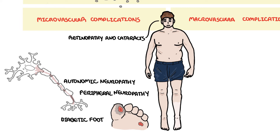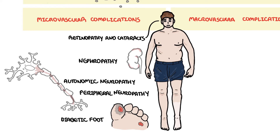The other type of neuropathy is autonomic neuropathy, which causes dysfunction in the sympathetic and parasympathetic nervous system. This can lead to things such as erectile dysfunction, postural hypotension and gastroparesis. The final type of microvascular complication is nephropathy, where you get damage to the glomerulus of the nephron, which leads to proteinuria. Diabetes is the number one cause of end-stage renal failure.